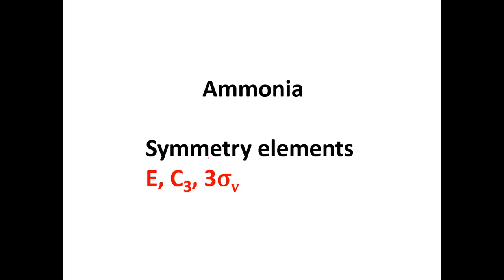The symmetry elements present in ammonia are: E, C3, and three sigma V planes.